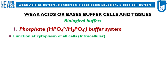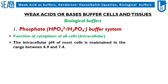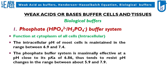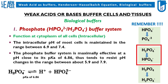The phosphate buffer system is maximally effective at a pH close to its pKa of 6.86, and thus tends to resist pH changes in the range between about 5.9 and 7.9. The reaction for dissociation of H2PO4- is shown, and the pKa of the HPO4²-/H2PO4- buffer system is 6.86.